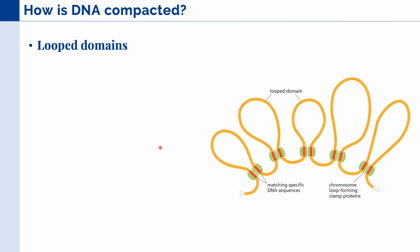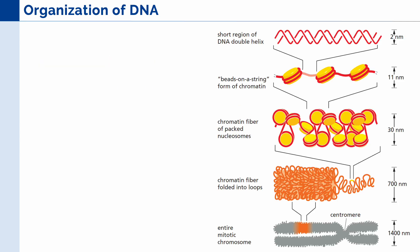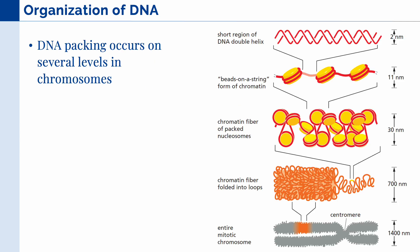Moving up, we can also organize chromatin into loop domains, and these are done by a specialized non-histone chromosomal protein, which we can see in green here. This yellow string here is actually the chromatin, which is composed of our different nucleosomes. Altogether, we can see that DNA packing actually occurs on several levels in the chromosome. We start with the double-stranded DNA, which is wound around histone proteins to create our nucleosomes. Next, the nucleosomes are packed together in what we call chromatin fiber, and the chromatin fiber is further packaged into our loops or loop domains, and together, those domains make up our mitotic chromosome.